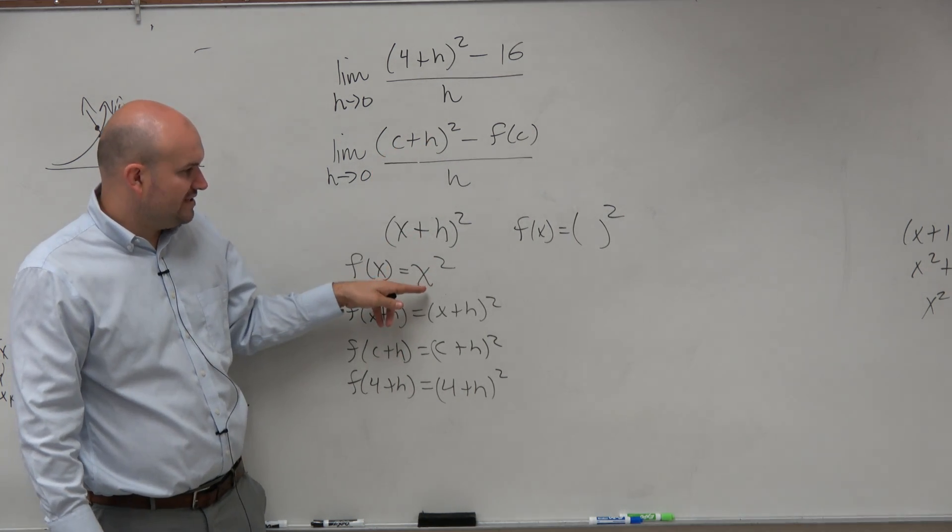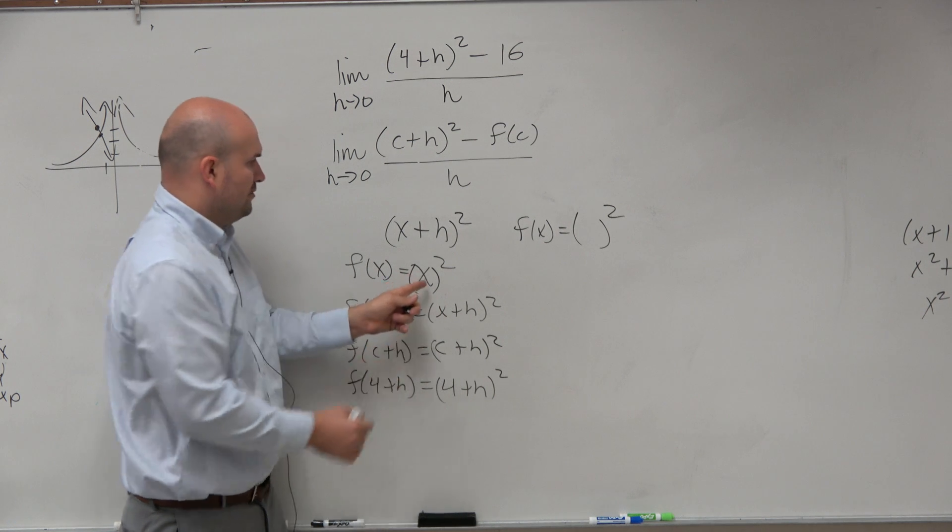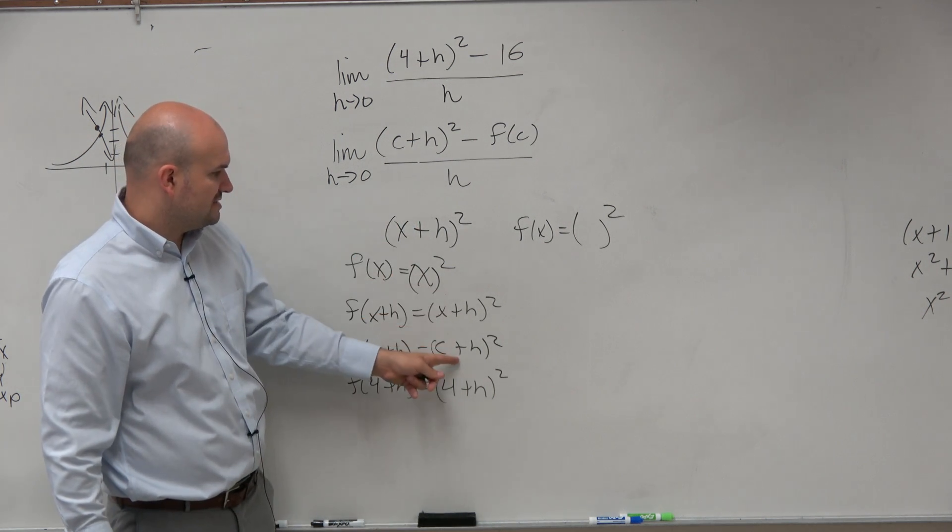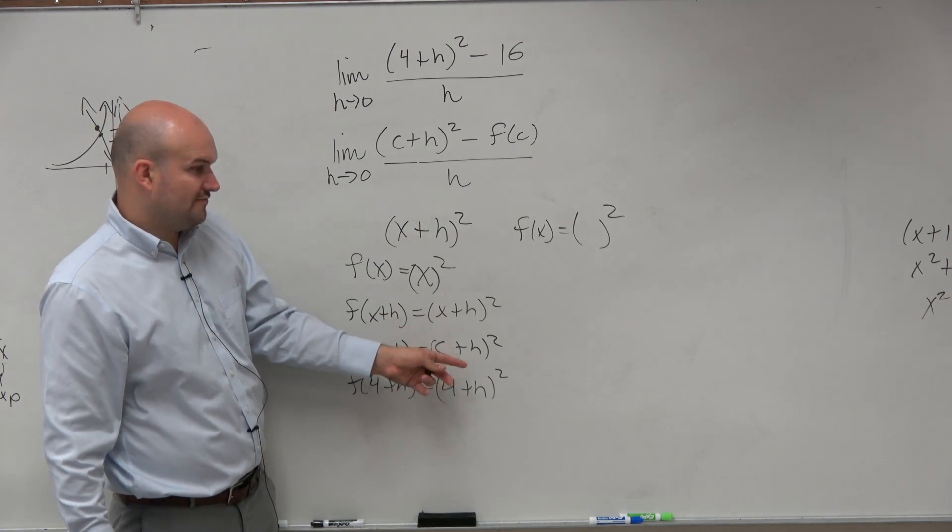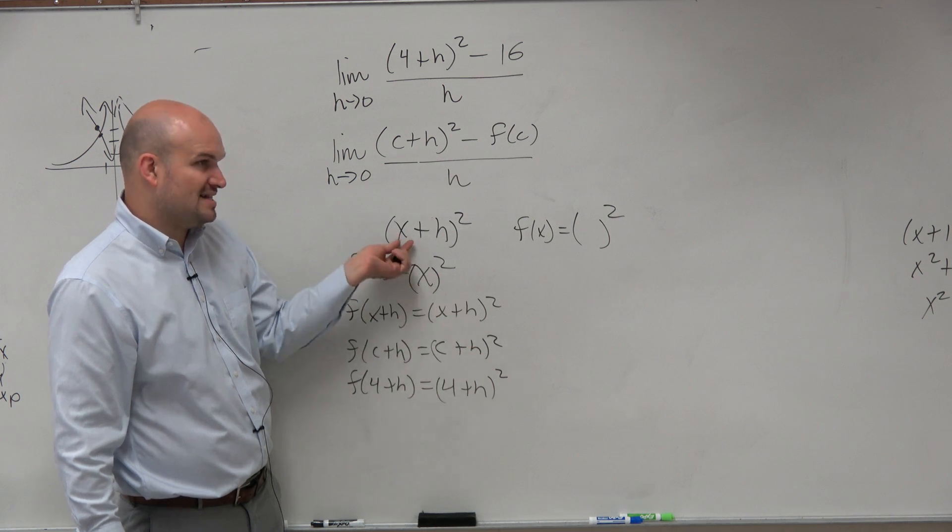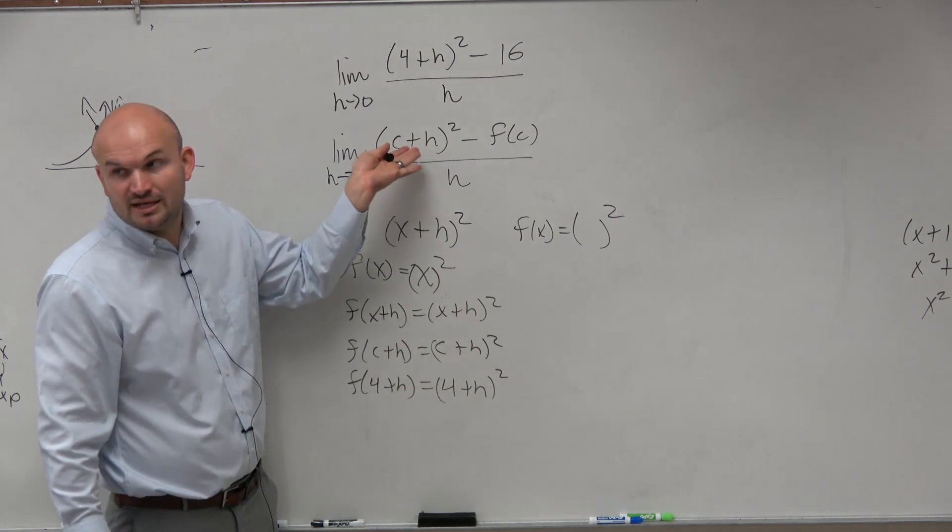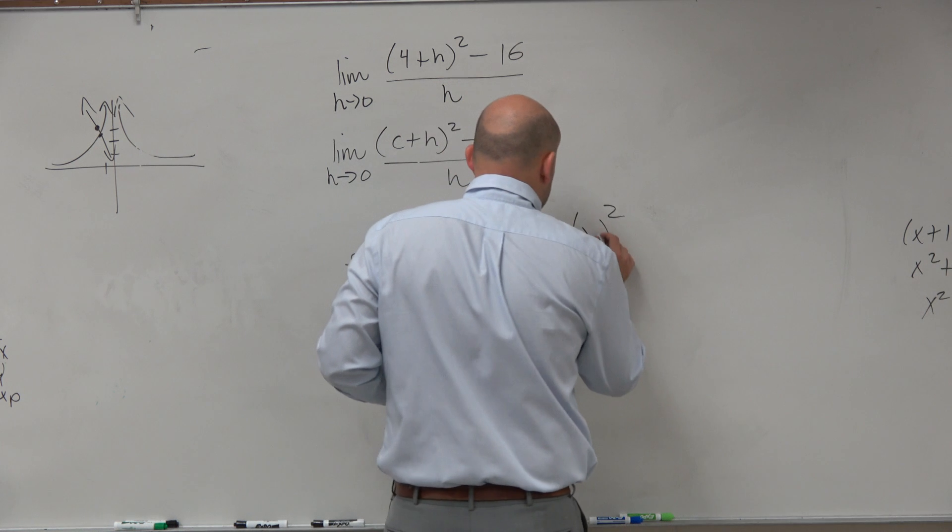So if you think about it, you're replacing X with C plus H. So if we just take C plus H and just go back to X, then that's how we get X squared. This function is just X squared.